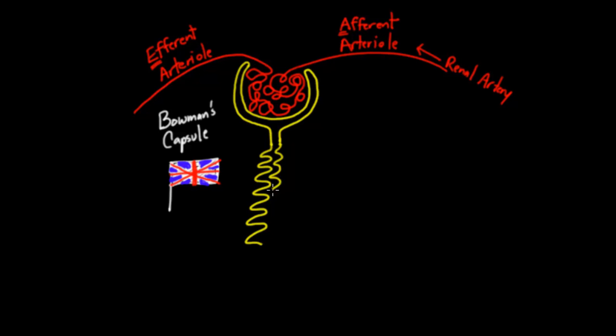The next part is looking really squiggly, very convoluted. And I'm trying to draw it that way purposefully because I want to show you a way of remembering that this is actually called the proximal because it's near the Bowman's capsule.